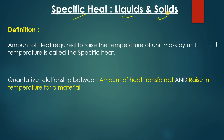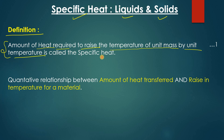What is the definition of specific heat? Here is how we will proceed: first we will see the definition, then we will see the examples, and after the examples we will conclude and come back to the definition. The definition of specific heat is: the amount of heat required to raise the temperature of unit mass by unit temperature is called the specific heat.